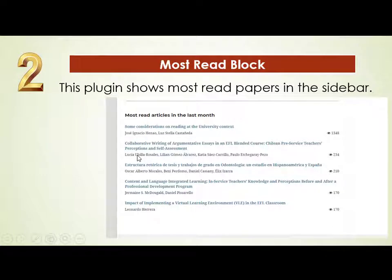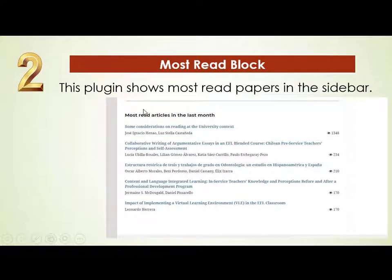Editors can configure the Most Read Block settings — for example, showing the top five or top ten articles, or the best articles from the last month or last year. I will make a separate video on how to install this plugin and configure its settings, but in this video I will just briefly discuss the five most useful plugins.